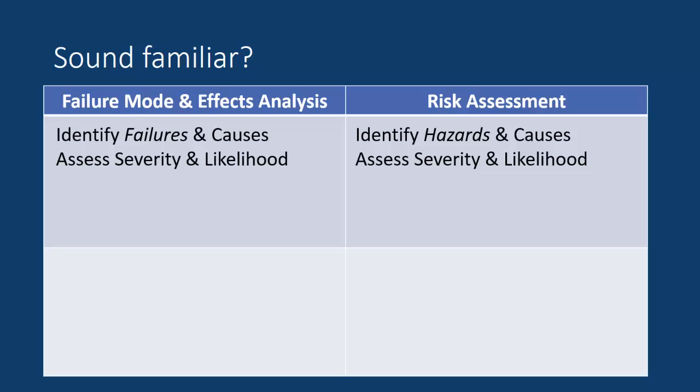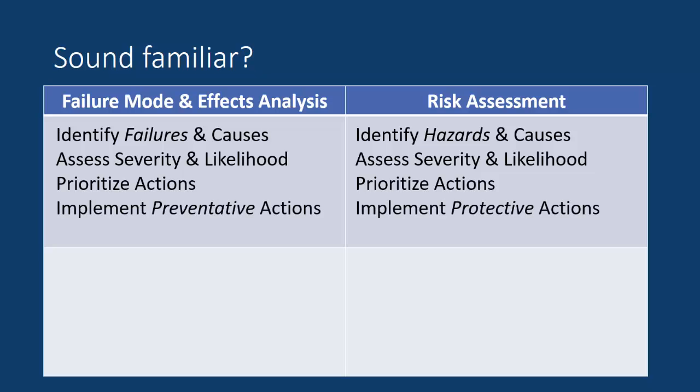Both of them, however, after you identify these failures or hazards, you focus on assessing severity and the likelihood of exposure for a person. Then you prioritize actions based on the risk that you determined. For the FMEA, you implement some preventative actions, which quite often are design changes. For risk assessment, you implement protective actions, which typically are going to be procedures or extra guards or things that are added at the end of the design, but could also be design changes. So preventative versus protective — there's some blending in between those.